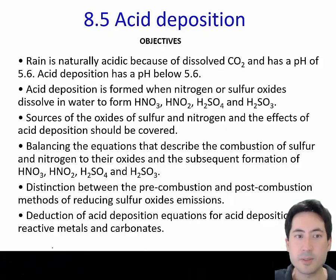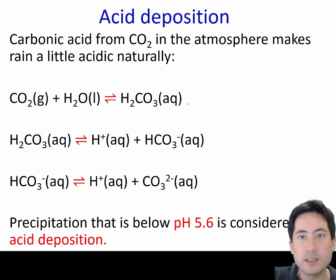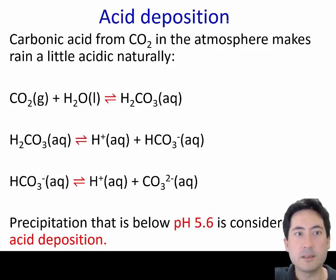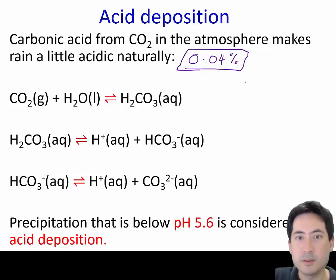Lesson 8.5, Acid Deposition. First, let it be clear that carbonic acid isn't included in acid deposition because the atmosphere normally contains 0.04% carbon dioxide, so that's not considered a pollutant because it's naturally occurring.